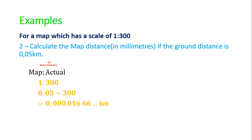We're almost finished, but this question wants the map distance in millimeters. To get from kilometers to millimeters, you times by a million. So if I take 0.00016666 times by a million, I get 16.67 millimeters, and that will be my distance on the actual map.